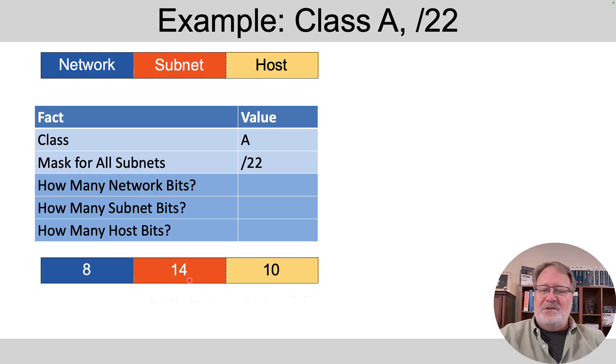So armed with that knowledge, 2 to the 14th gives us the number of subnets. And 2 to the 10th minus 2 gives us the number of hosts per subnet.